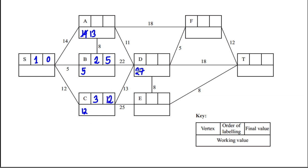Branching from C: 12 + 13 = 25, which is better than 27, and 12 + 25 = 37. Looking at temporary labels — 13, 25, and 37 — the smallest is 13, so A becomes the fourth permanent label with value 13. Branching from A: 13 + 18 = 31, and 13 + 11 = 24, which is the best yet, so D gets 24. Looking at the temporary labels, the smallest is 24, so D is permanently labelled fifth with value 24.